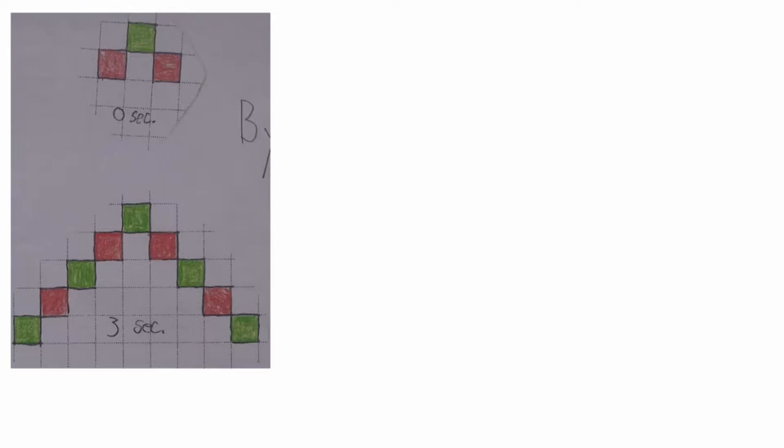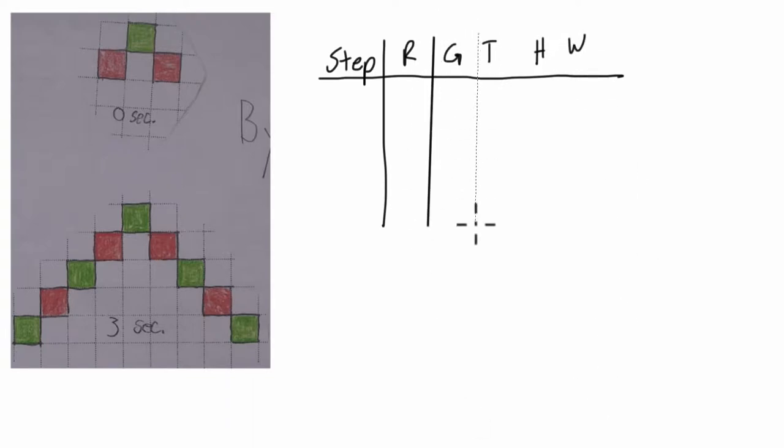What I'd like you to look at is how to write every aspect of your pattern as a step function. So for example, you have a table, and I'll start this off for you, I'll help you out a little bit. We've got step number, and what you looked at, you looked at the red pixel, you looked at the green pixels, the total pixels, the height and the width as a function of time. And as I requested, you wrote each of these things as a linear function. So I'm asking you now to write them as a step function.